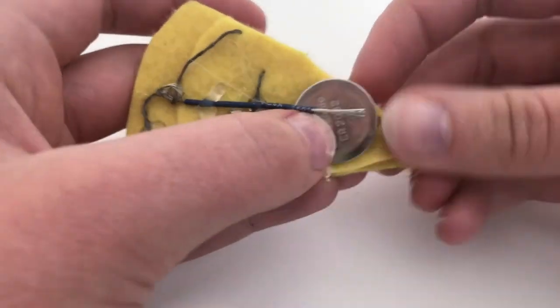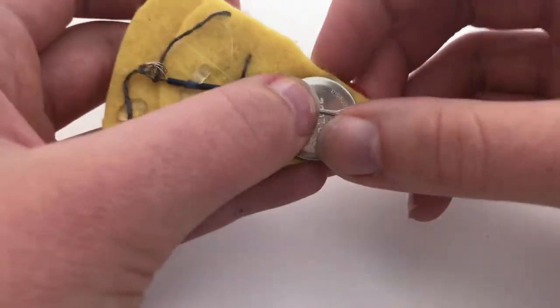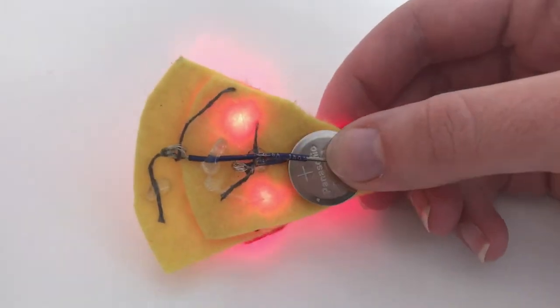Attach the ends of your wires to your battery holder and glue down the holder in place. Test again to make sure that everything is working.